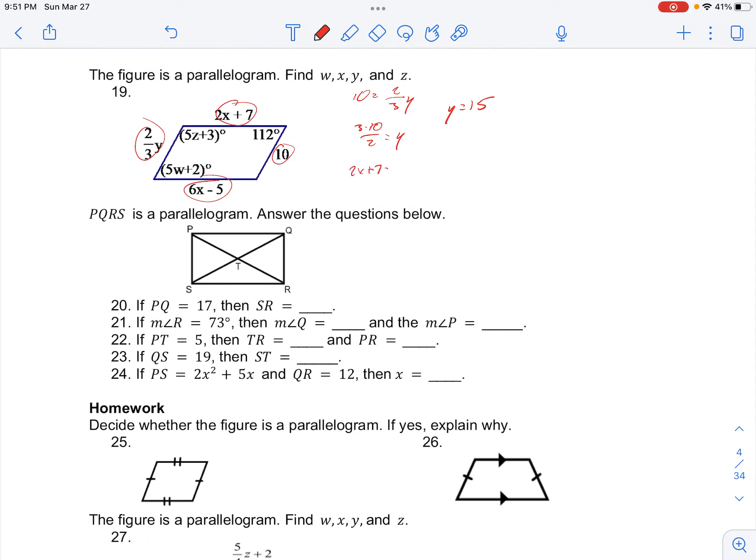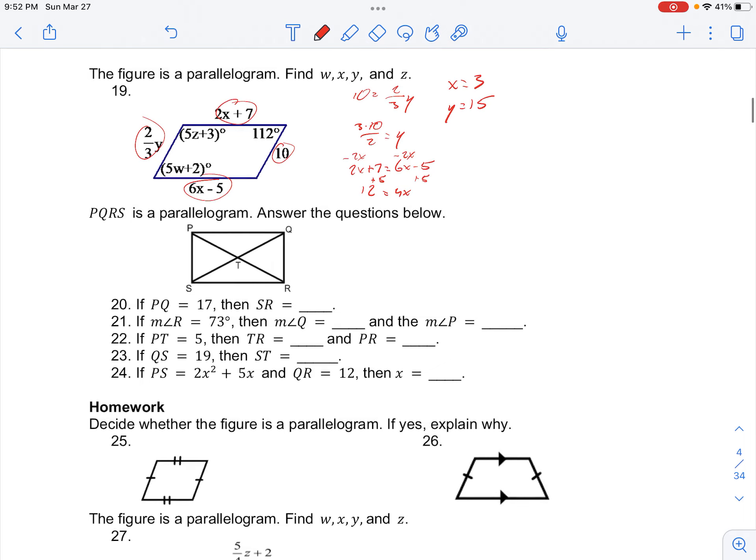We can set 2x plus 7 equal to 6x minus 5, moving like terms to the same sides. So adding 5 and subtracting 2x, we have 12 equals 4x, dividing by 4, we have x equals 3. And moving on to finding w.